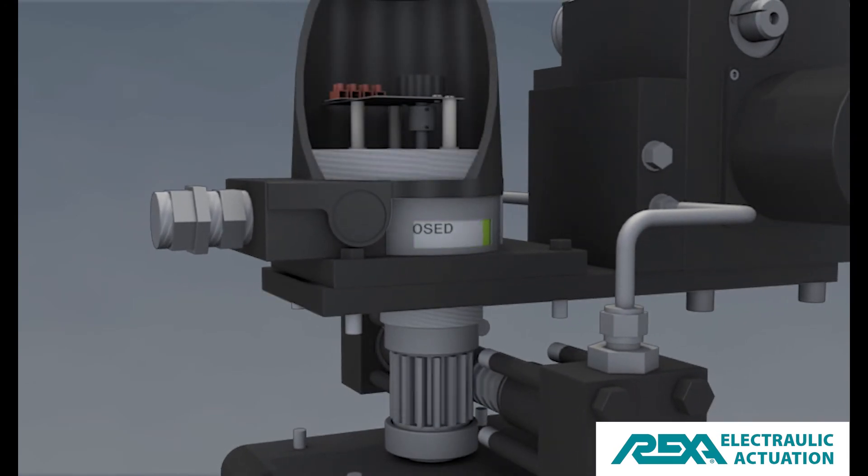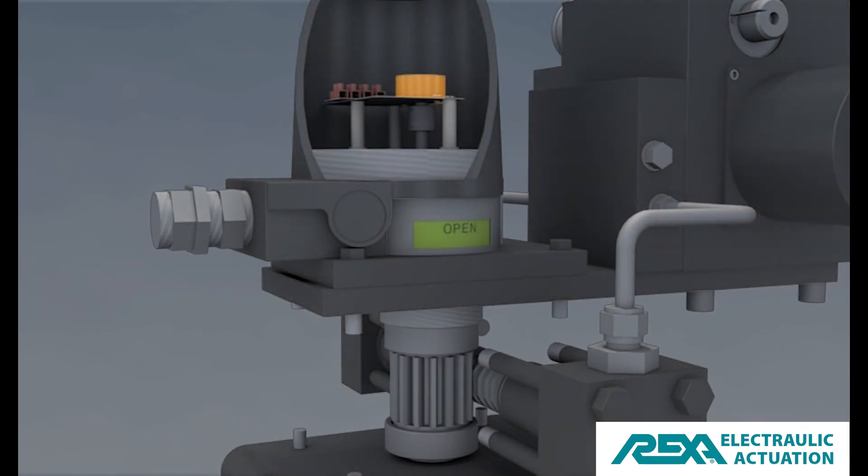The feedback module contains a potentiometer connected to the pinion. As the pinion rotates, it will also rotate the potentiometer, adjusting the signal from this device, which represents the position of the valve.